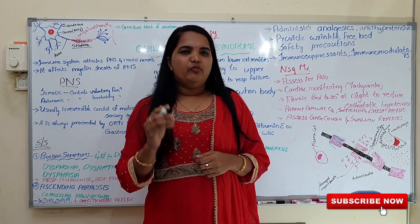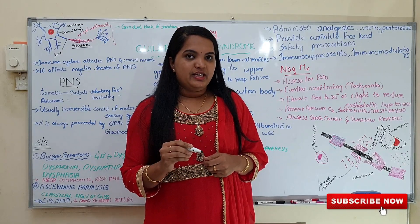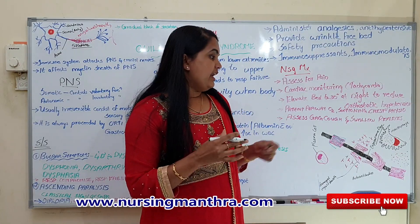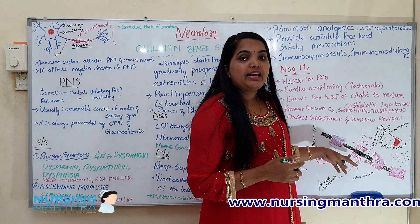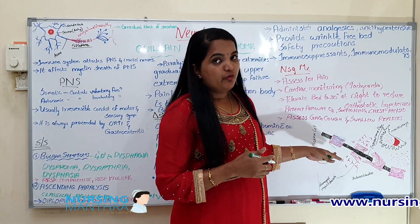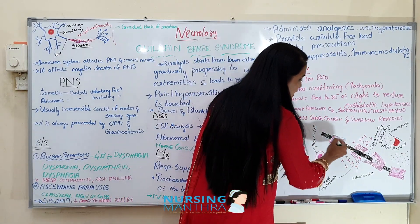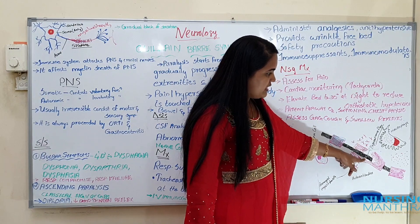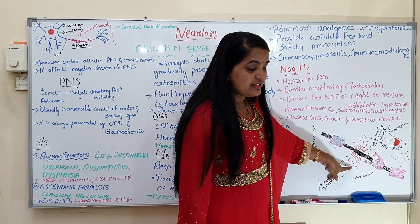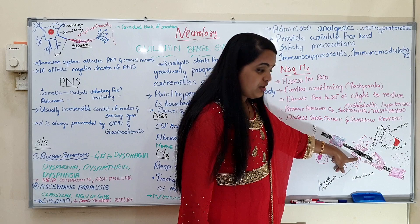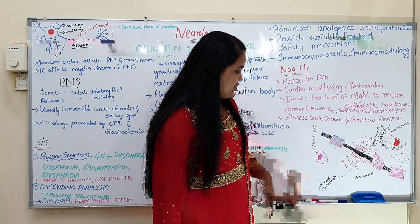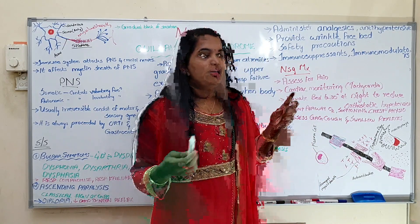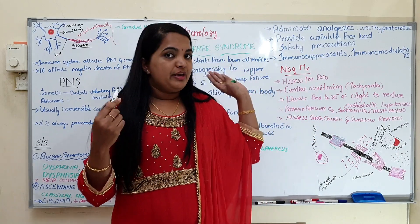Guillain-Barré syndrome is an autoimmune disorder. The immune reactions of our own body cells cause problems to the myelin sheath or nerve fibers. Same like multiple sclerosis, demyelination is happening here. Auto-antibodies are created and attack the myelin sheath, causing demyelination. You can see the damaged myelin sheath in this picture — that is the problem happening in Guillain-Barré syndrome.